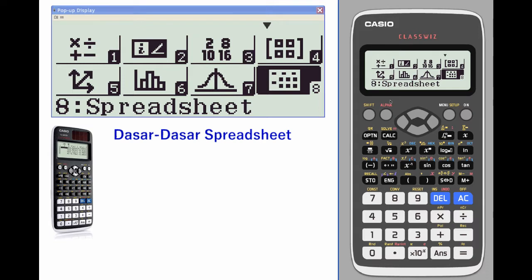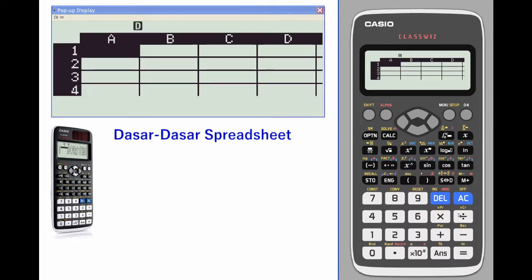To access spreadsheet basics, toggle down to number eight or press eight to enter. The spreadsheet looks like your normal everyday spreadsheet with columns A through E and rows all the way down to 45.